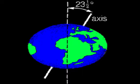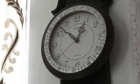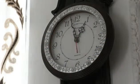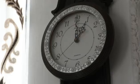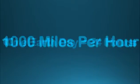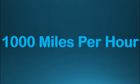As you can see here, the earth's axis is not straight. It's tilted at an angle of 23 and a half degrees. The earth takes roughly 24 hours to complete one rotation about its axis. This is called one earth day. The earth moves at the speed of roughly 1000 miles per hour.